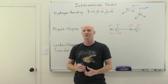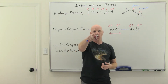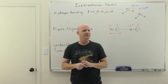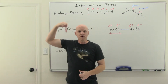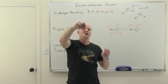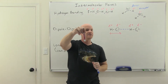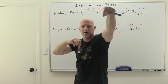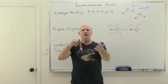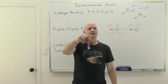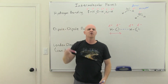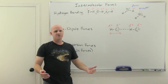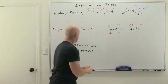With London dispersion forces, even a nonpolar molecule can be attracted to another. The electron cloud is in motion — so at any one instant, more electrons may be facing one side, making that side temporarily slightly negative. This induces the neighboring molecule to shift its electrons to the opposite side, making it temporarily positive facing the first molecule. The result is a weak, temporary dipole — this is a London dispersion force, also called a van der Waals force.